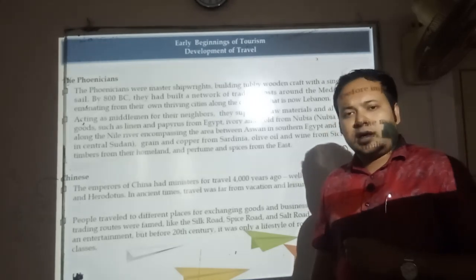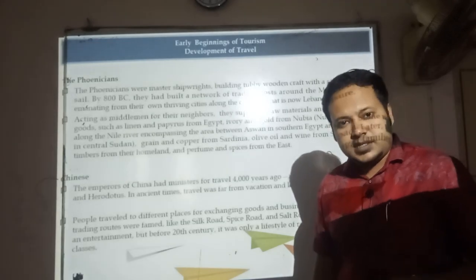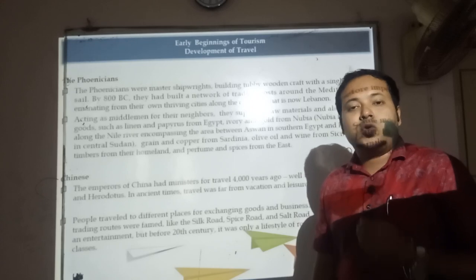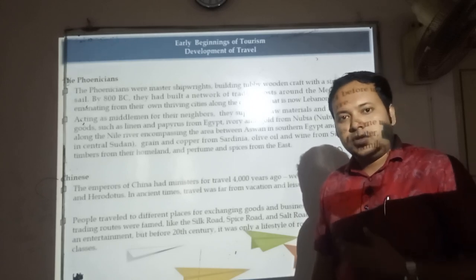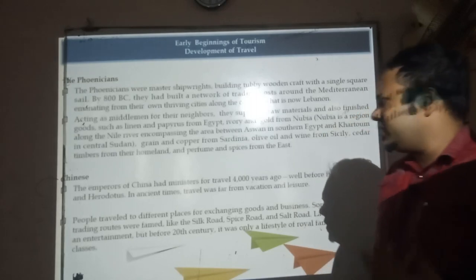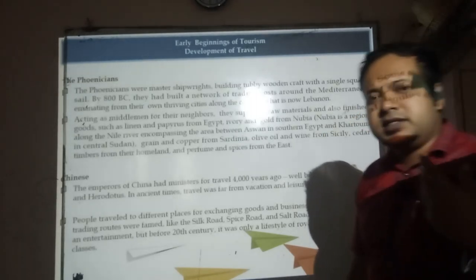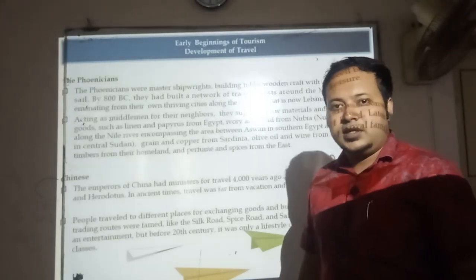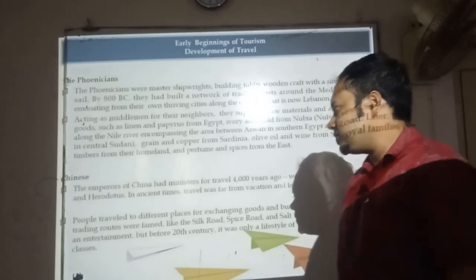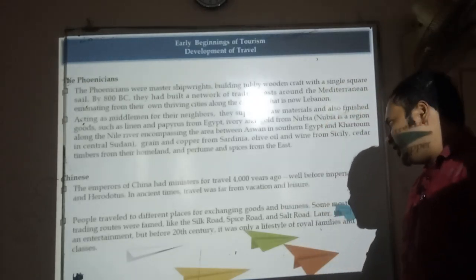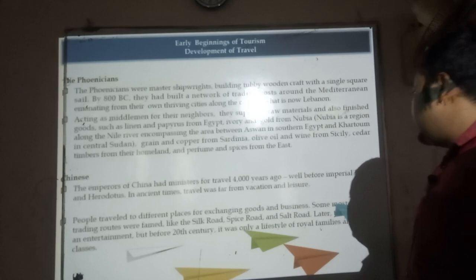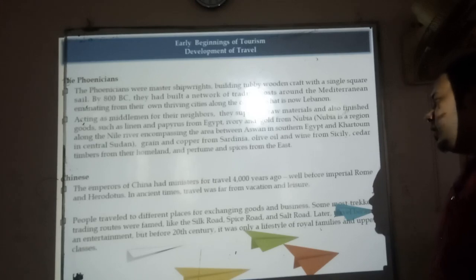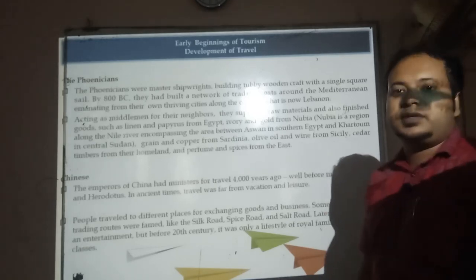The Chinese completely developed their businesses and socio-economic development through tourism products — by selling products and creating and managing ideas to attract local, domestic, and international tourists. People traveled to different places for exchanging goods and business. The most-traveled trading roads were framed as the Silk Road, Spice Road, and Salt Road, developed during those ages.